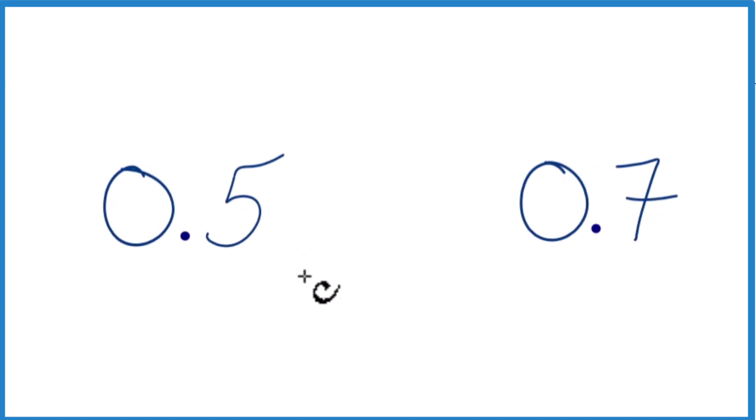OK, so we want to look at which one of these decimals is larger, 0.5 or 0.7. And here's how you can do that.